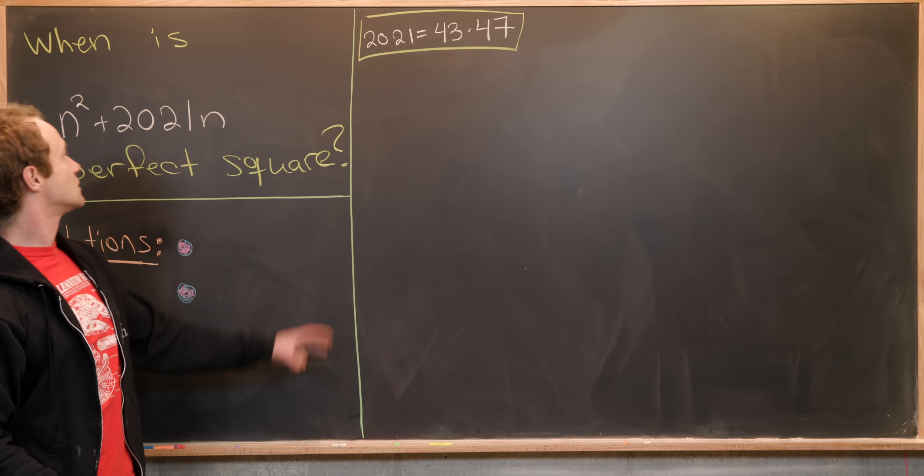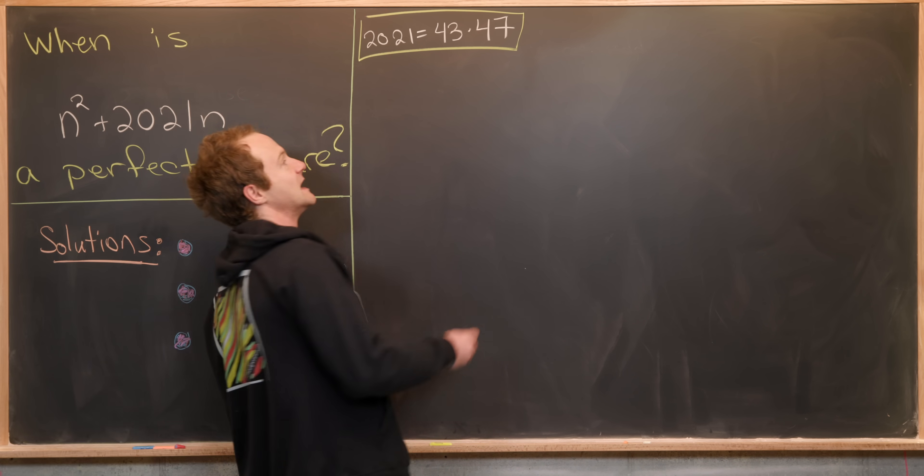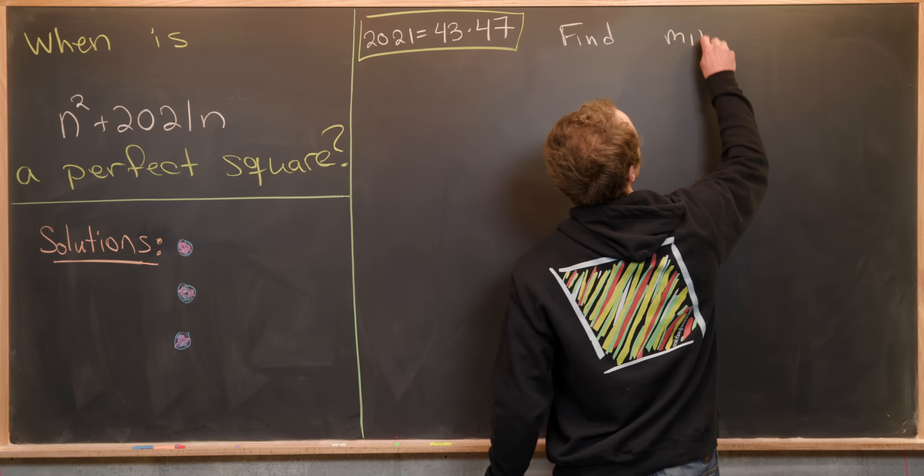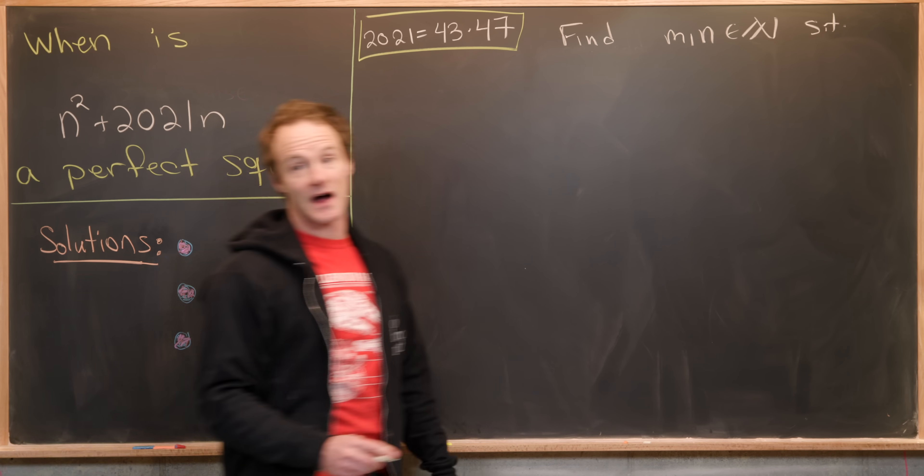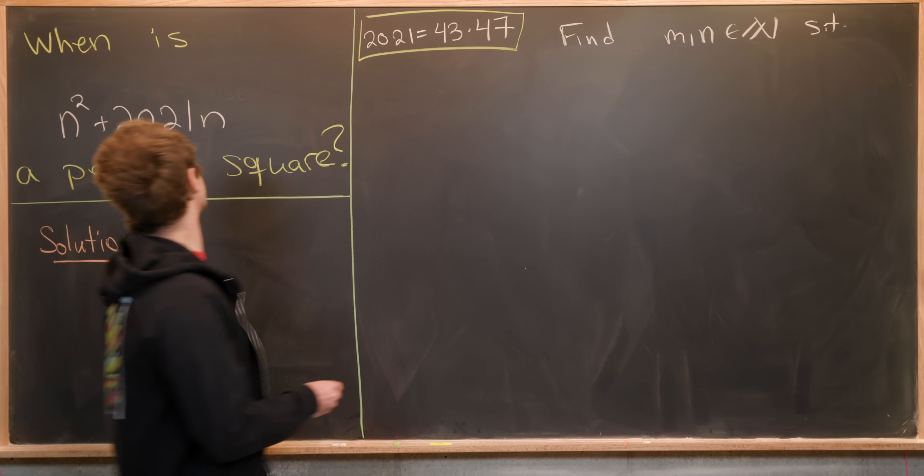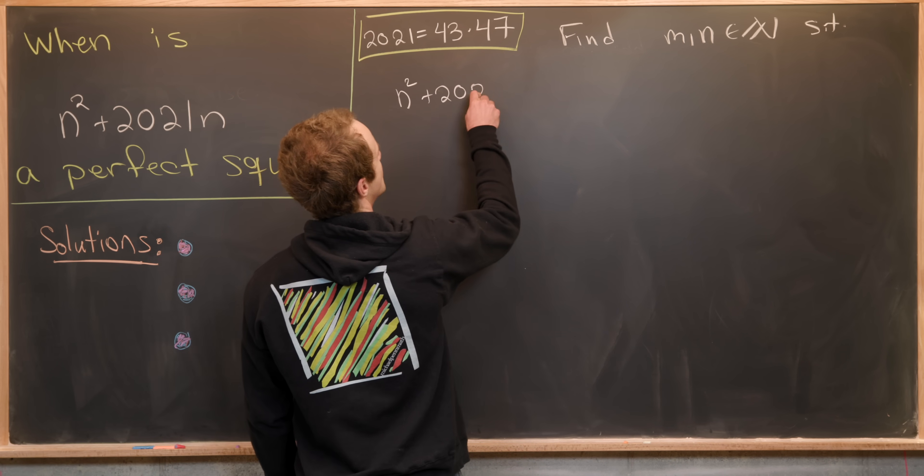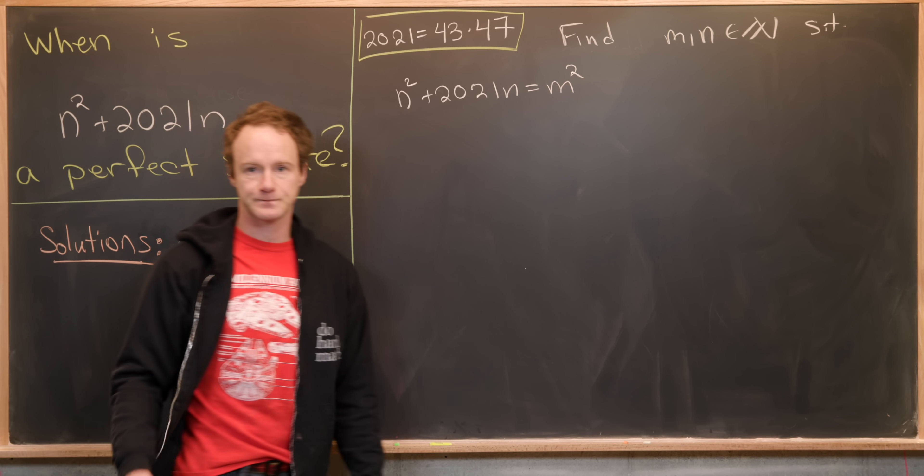Okay, so let's notice that answering the question when is this a perfect square is equivalent to finding m and n, which are natural numbers, satisfying the following equation: n² + 2021n = m².